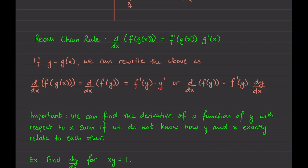Another notation — and I'll keep using this again and again — is we can write this in Leibniz notation: d/dx of f of y. Chain rule: find the derivative of the outside keeping the inside the same, times the derivative of the inside. You might be wondering why anyone would want to do this. The reason is that this allows us to find the derivative of a function of y with respect to x. We found the derivative of a function of y with respect to x without even knowing what that relationship was.